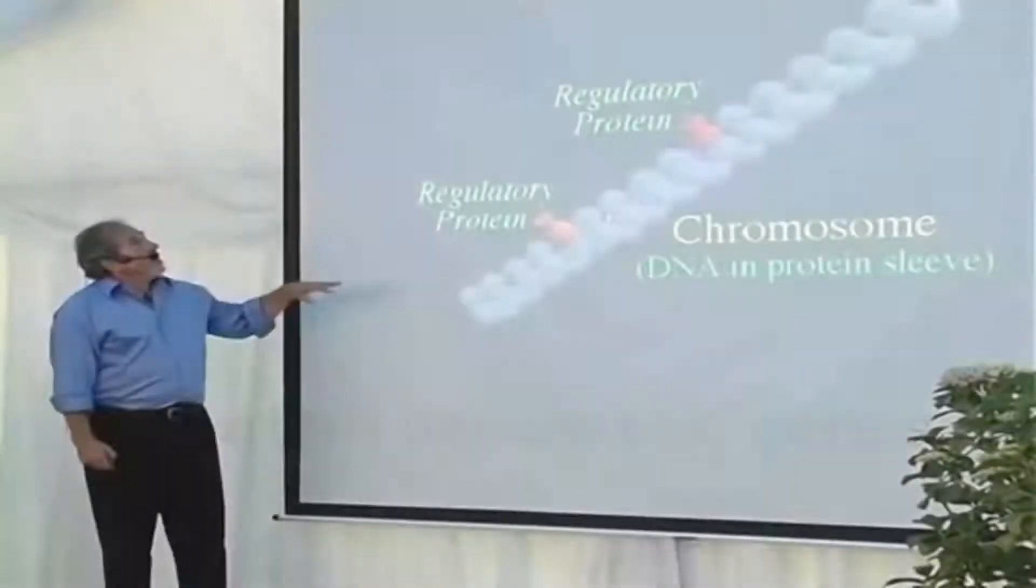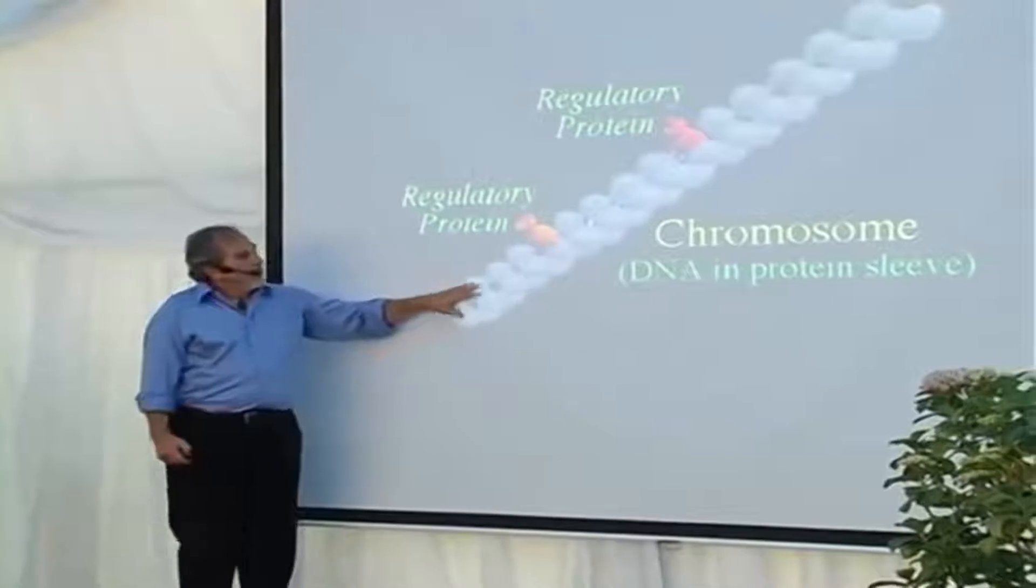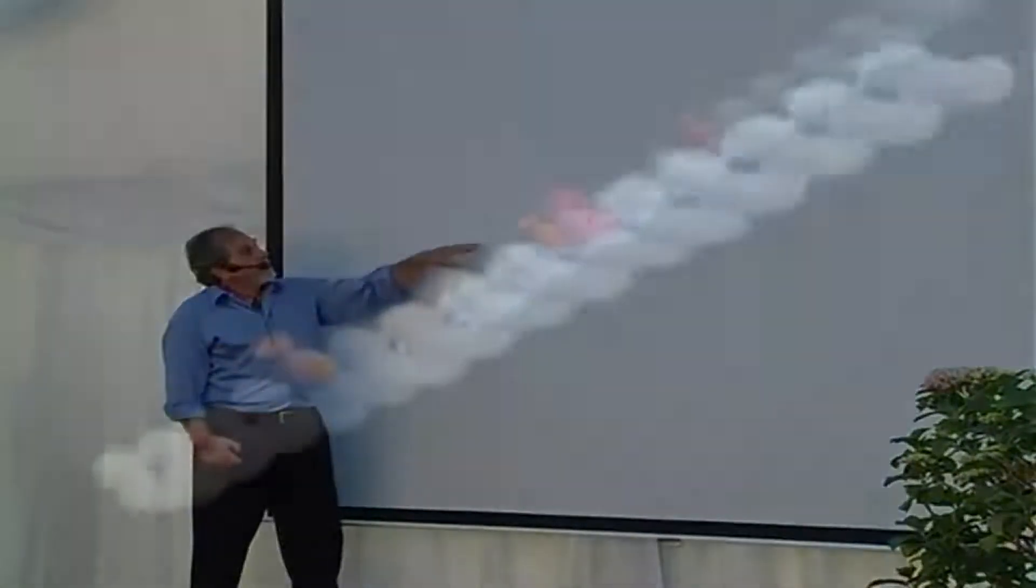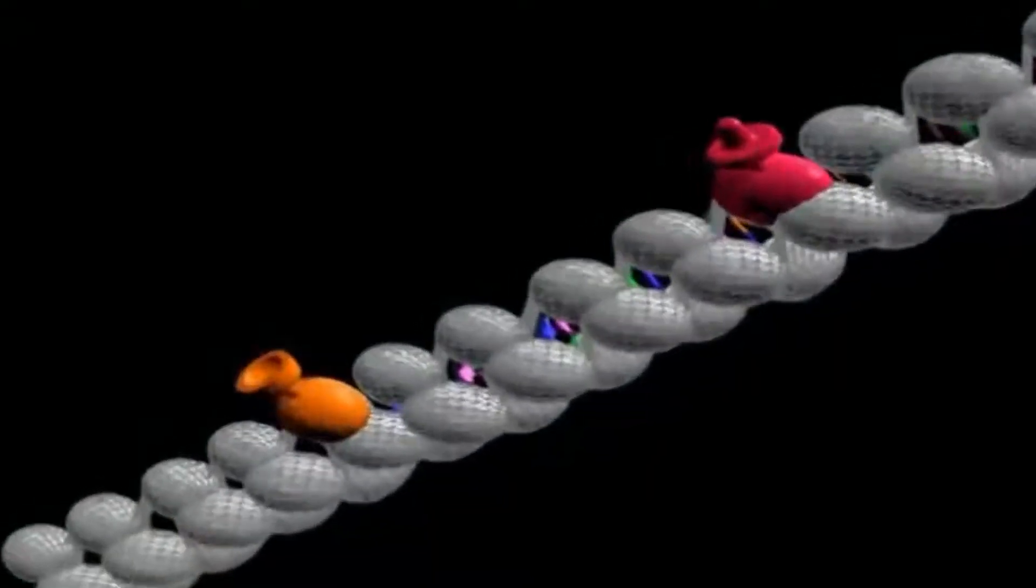Now I will show a video of how it works. Very simple. The chromosome is DNA core with protein sleeve. At the beginning of each gene is a protein called a regulatory protein.